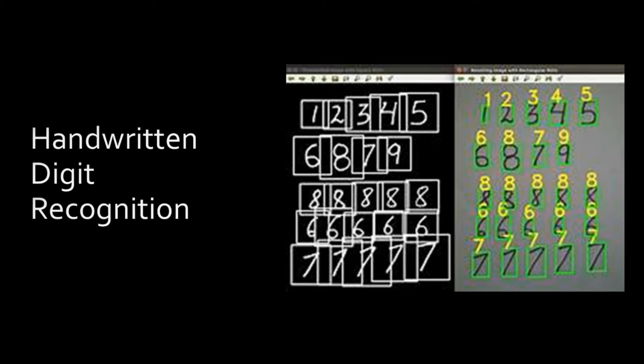Then we are going to work on handwritten digit recognition. If you write a digit with your finger on your phone or with a pen, it will take that as input — type one, it takes one; type two, it takes two. Mobile companies and software apps have this kind of software, but we are going to create our own.